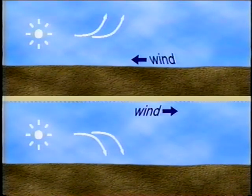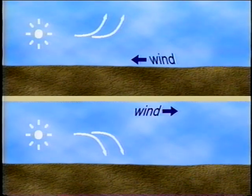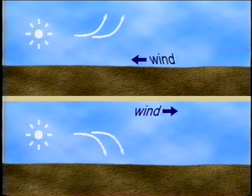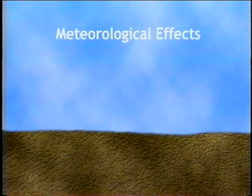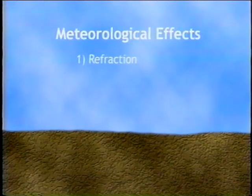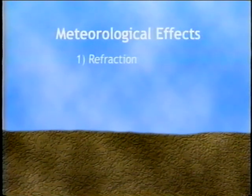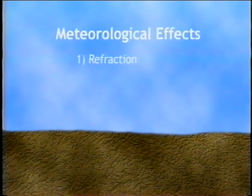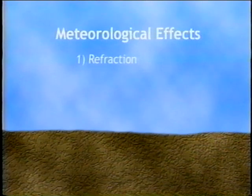Besides refraction due to temperature gradients, wind can also cause the sound to deviate from a straight path. When sound is propagating upwind, the ray paths curve upward as with the temperature lapse, decreasing the received noise level. Sound may reach the receiver with greater intensity if it is refracted downward toward the earth. While atmospheric conditions can have major effects on propagation over distances greater than about 100 meters or 300 feet, typical highway studies are performed within 100 meters from the highway, where meteorological effects would be less severe.